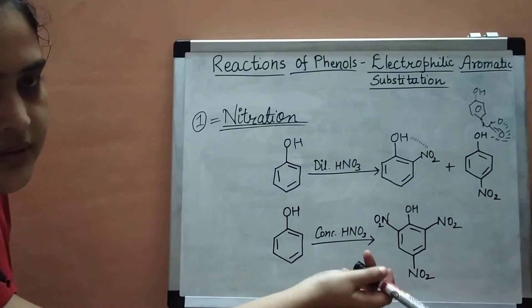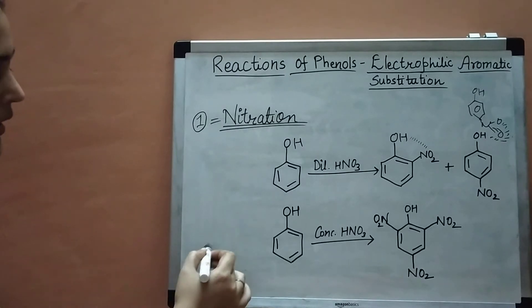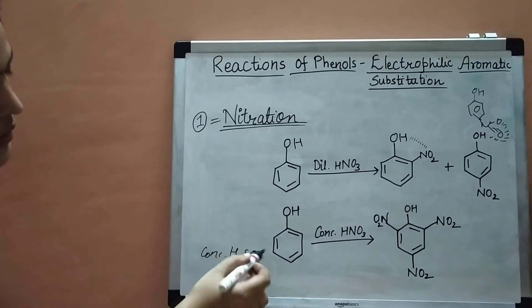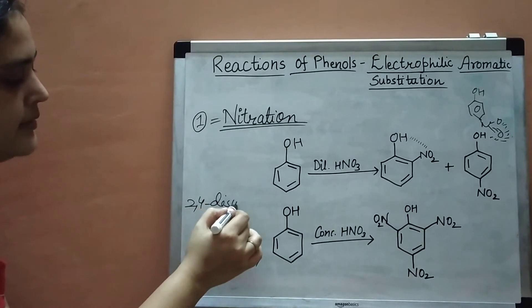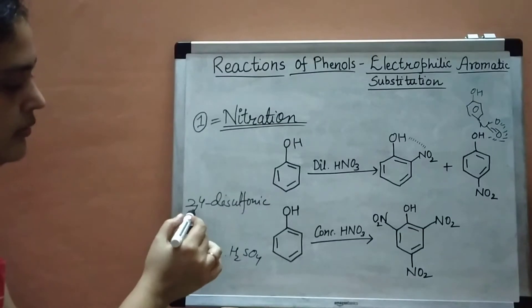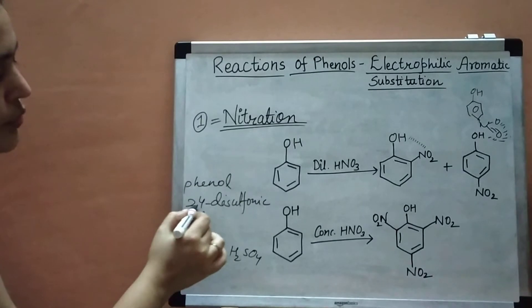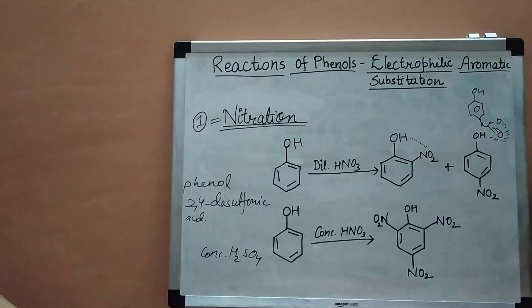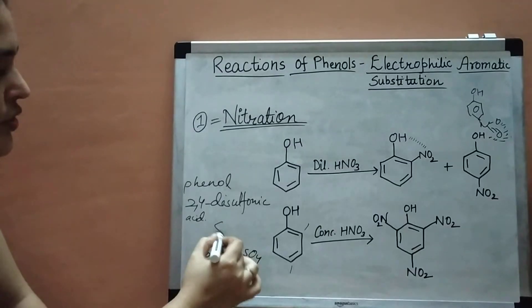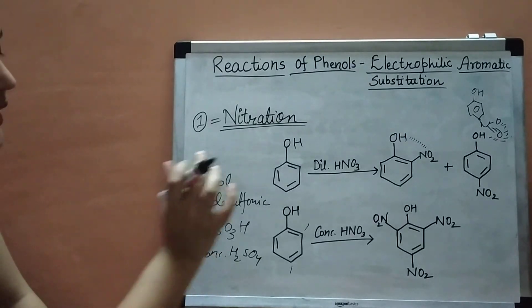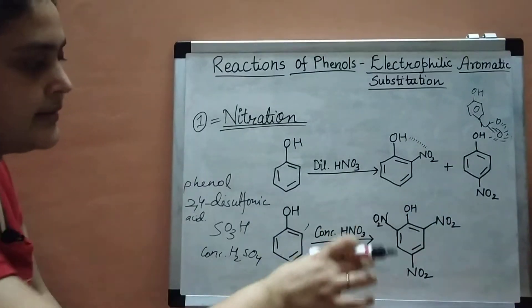To improve the yield of picric acid, we first add concentrated sulfuric acid (H2SO4) to phenol. This gives phenol-2,4-disulfonic acid — meaning SO3H groups are introduced at the 2nd and 4th positions of the phenol molecule. When you then add concentrated nitric acid to this intermediate (phenol-2,4-disulfonic acid), you get picric acid in very good yield.